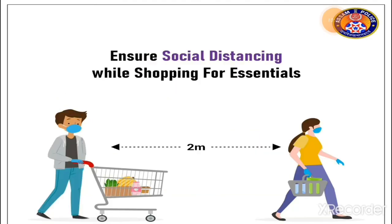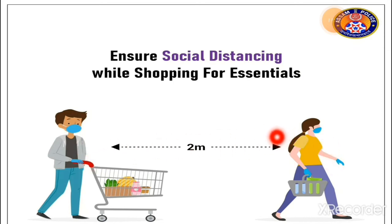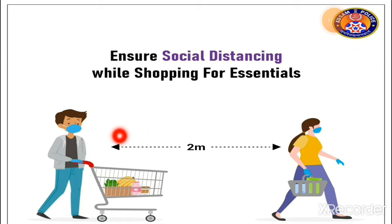Nowadays we are maintaining social distancing. Whenever you go shopping for essentials, you hear the word social distancing. There are 2 persons and the distance between them must be 2 meters. This way you can understand how to maintain social distance — you have to keep distance with each and everything whenever you go outside.